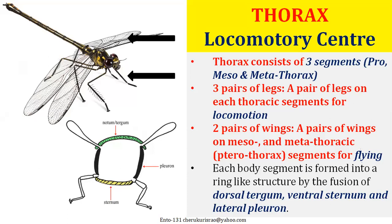The thorax consists of three segments: the prothoracic region, the mesothoracic region (meso meaning middle), and the metathoracic region. There is a pair of legs in each thoracic region and a pair of wings in the second and third thoracic regions. Each thoracic segment has four plates in a ring-like structure — the dorsal side is called the tergum, the lower ventral side is called the sternum, and the lateral side is called the pleural arm.